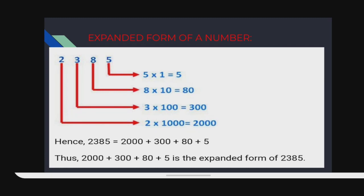Expanded form of a number. The number is 2385. The 5 is in the ones place, so 5 into 1 = 5. The 8 is in the tens place, 8 into 10 = 80. The 3 is in the hundreds place, 3 into 100 = 300. The 2 is in the thousands place, 2 into 1000 = 2000. Hence 2385 can be written as 2000 + 300 + 80 + 5.